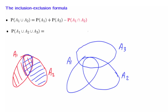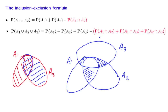We first start by adding the probabilities of the different sets. But then we realize that, for example, this part of the diagram has been counted twice — it shows up once inside the probability of a1 and once inside the probability of a2. So we need to make a correction and subtract the probabilities of the pairwise intersections.